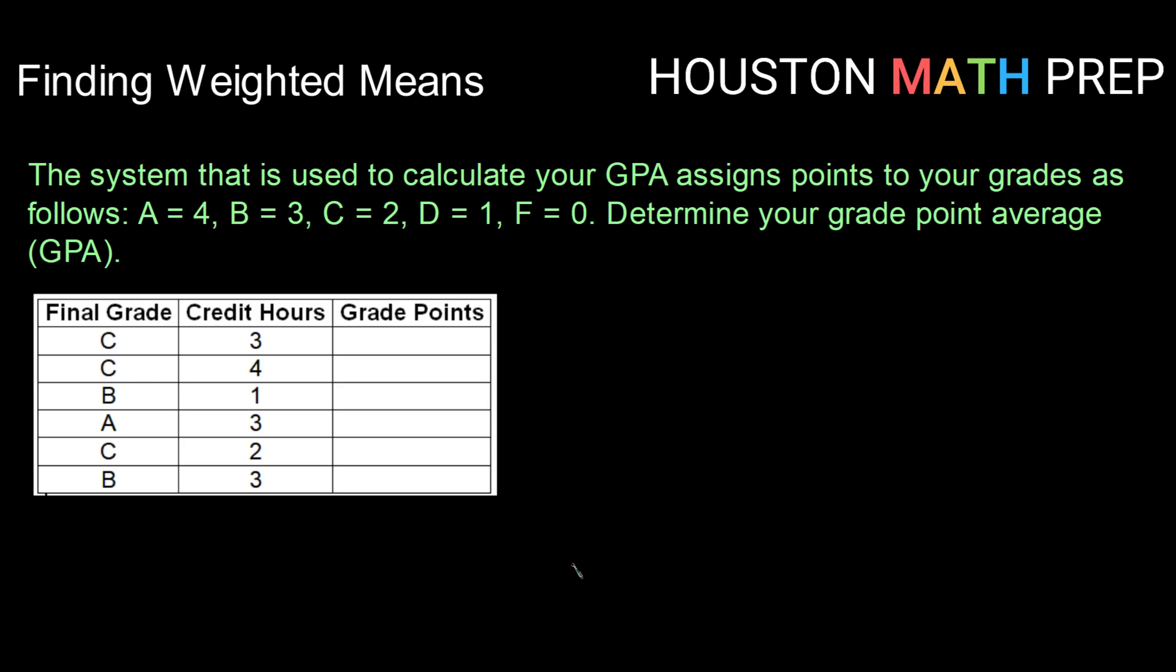That is a system that is used to assign points to your grades so that you can get an overall feel for how you've been doing. So this system assigns points as follows: An A is worth 4 points, a B is worth 3, a C is worth 2, a D is worth 1, and an F is worth 0.